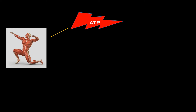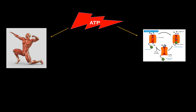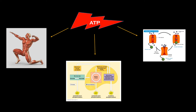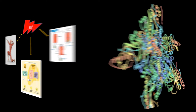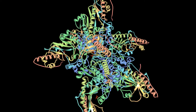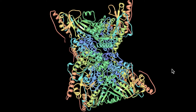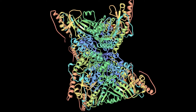All biological processes require energy. Energy is needed to move our muscles, to transport ions or substances across a membrane, and even to make more energy. It is fitting, then, that there must be a complex way to regulate energy levels in the cell to allow for these biological processes to have immediate access to ATP.